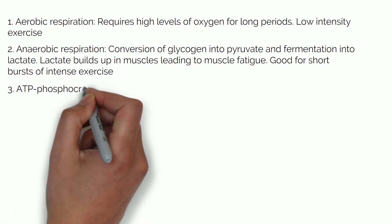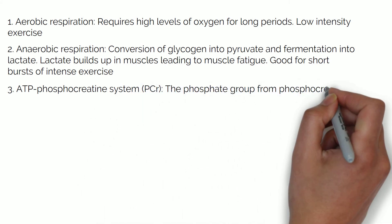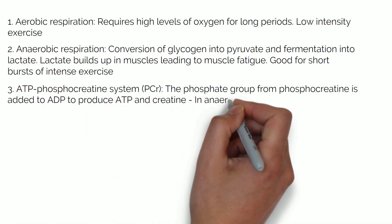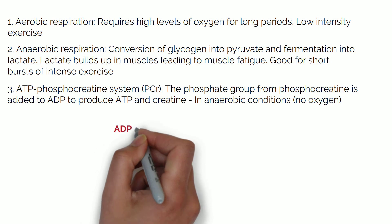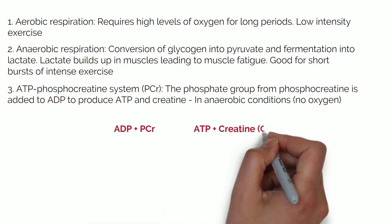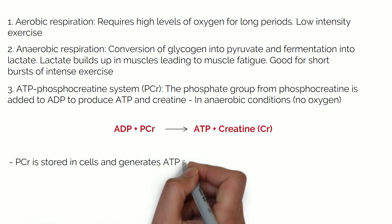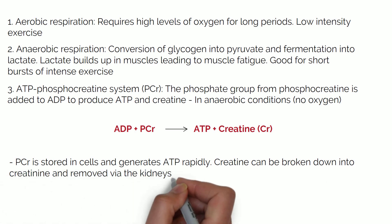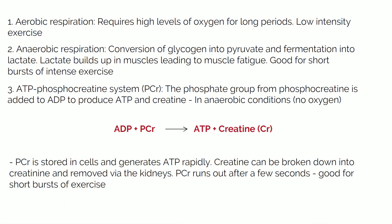Three: the ATP-phosphocreatine system. The phosphate group from phosphocreatine or PCr is added to ADP to produce ATP and creatine. This occurs in the absence of oxygen, or anaerobic conditions. PCr is stored in cells and generates ATP rapidly. Creatine can be broken down into creatinine and removed via the kidneys. PCr runs out after a few seconds, so it is good for short bursts of exercise.